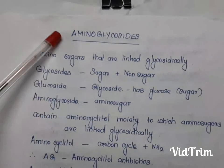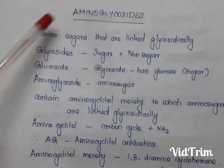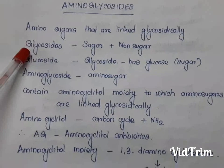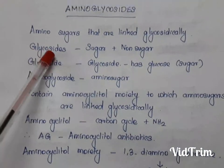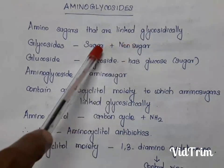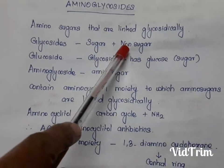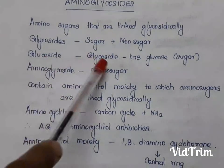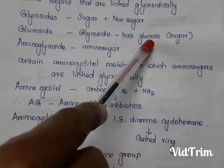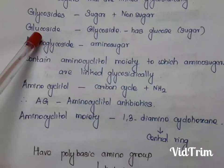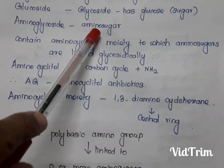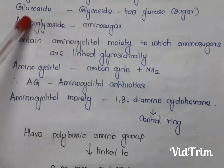Today's class will be focusing on aminoglycosides. What are aminoglycosides? They are amino sugars that are linked glycosidically. A glycoside has two parts: one is a sugar part and another is a non-sugar part, connected by a glycosidic linkage or ether linkage. If that sugar is a glucose, it is called a glucoside. In aminoglycosides, the sugar is connected with amino groups, so that glycoside is called an aminoglycoside.